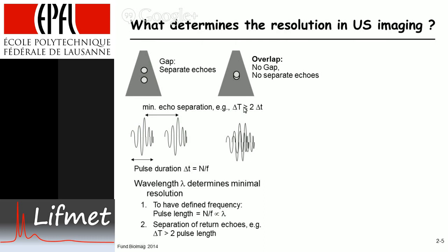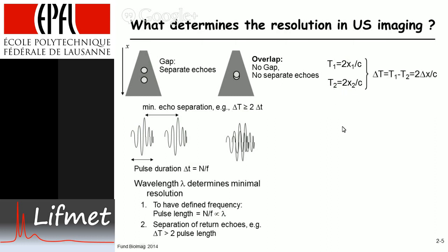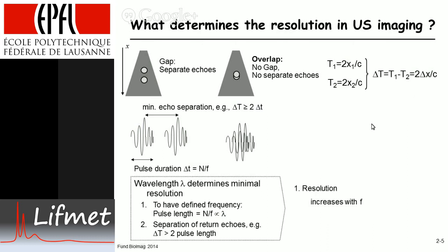One needs a certain minimum time between the echoes. This minimum time, through the equation distance = velocity × time / 2, gives us the minimum spatial separation Delta X that is possible. Echo one arrives at time 2x₁/C, echo two at 2x₂/C, so Delta T = 2·ΔX/C. Therefore, the minimum Delta T that one can resolve defines the minimum Delta X — the minimum separation of two objects that one can distinguish.